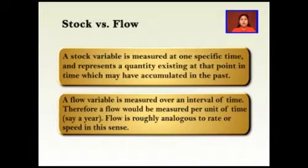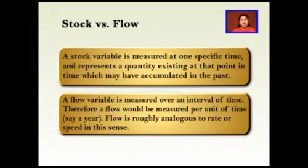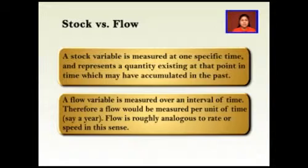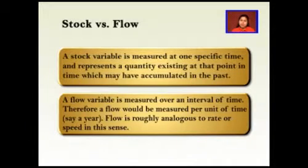To summarize: a stock variable is measured at one specific time and represents a quantity existing at that point, which may have accumulated in the past. A flow variable is measured over an interval of time and is measured per unit of time. In the previous diagrammatic presentation, we have seen three elements: the flow of new investment, the stock of capital, and depreciation or depletion.